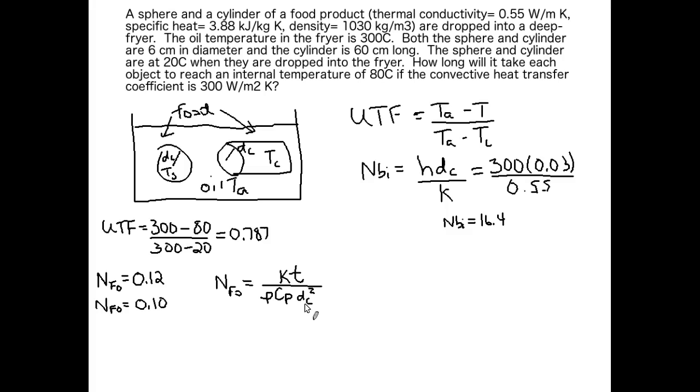Let's rearrange that to solve for t. The only difference we have here between our cylinder and our sphere is the Fourier number itself. Our critical dimension is the same and it's the same food, so it has the same physical properties. So let's solve for the time needed to heat the sphere versus the time needed to heat the cylinder.